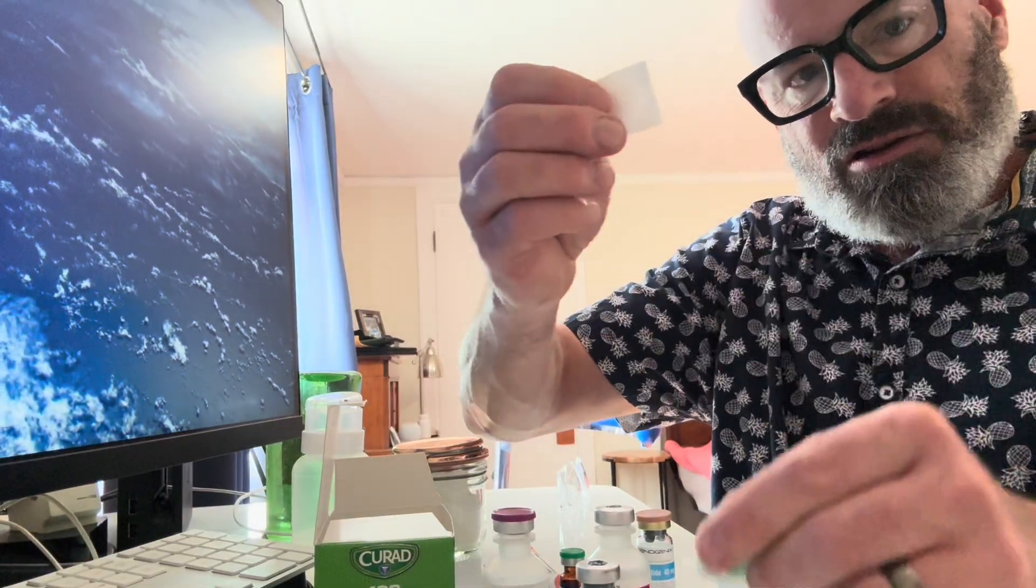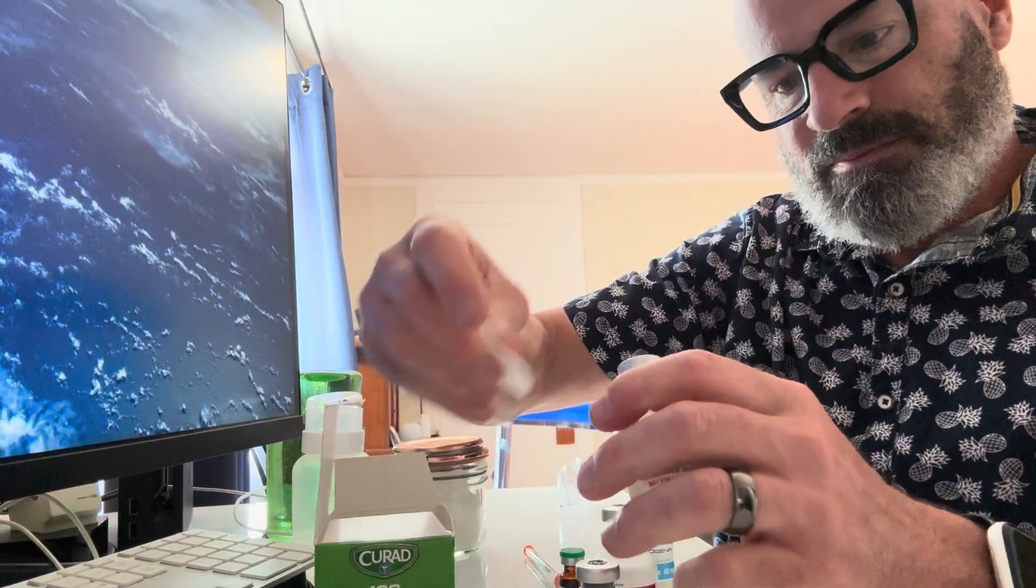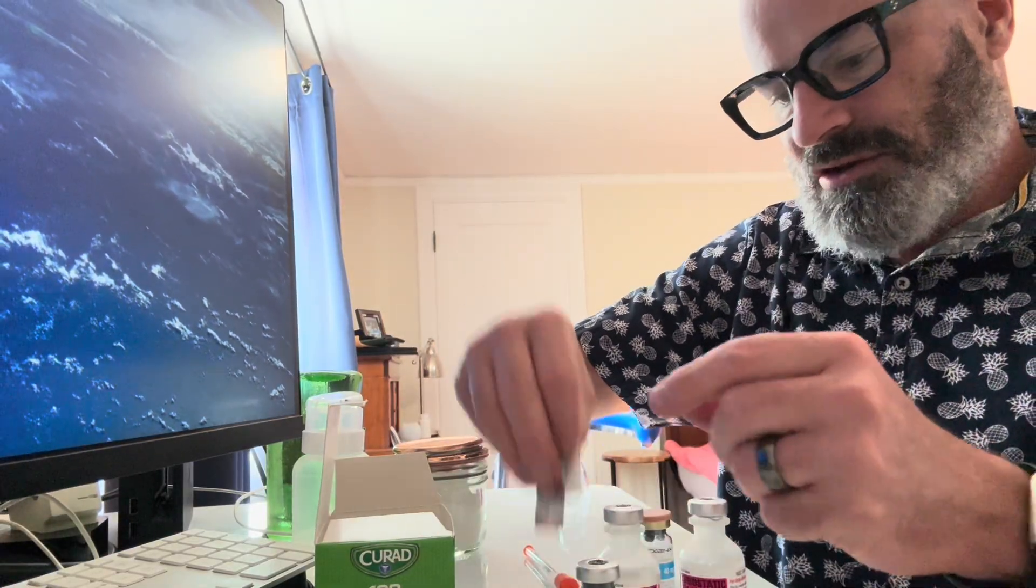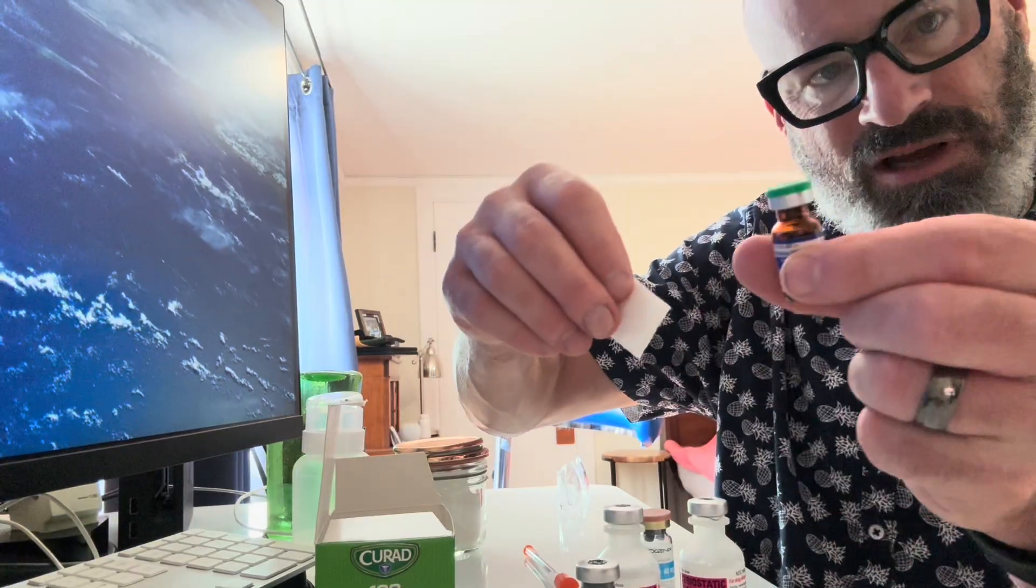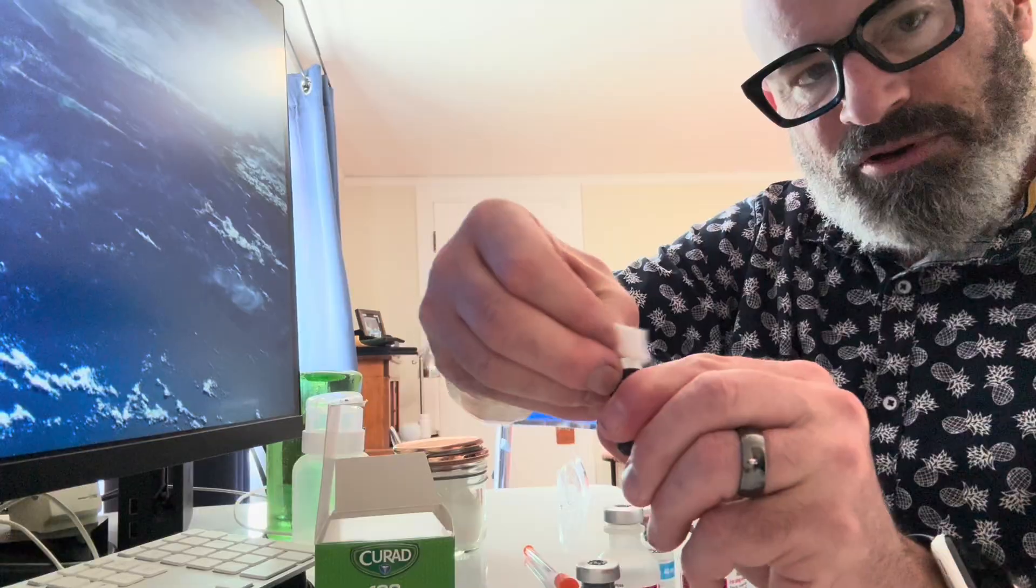You just take alcohol swab. You pop the caps on your bacteriostatic water. You clean the stoppers. And then you pop the cap of your peptide, whatever that might be, and clean the little stopper there as well.